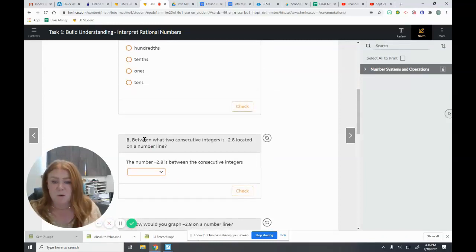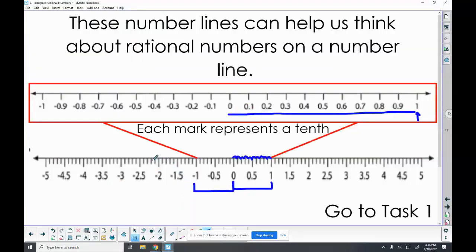Now it wants to know between what two consecutive integers is 2.8 located on a number line. So we're going to pull this back up and we're going to think of negative 2.8. I can see negative 2.5, 2.6, 2.7, 2.8 is right here. So then I'm looking for the whole numbers. I can see that negative 2.8 is between two and three. And I can do that without the number line as well.